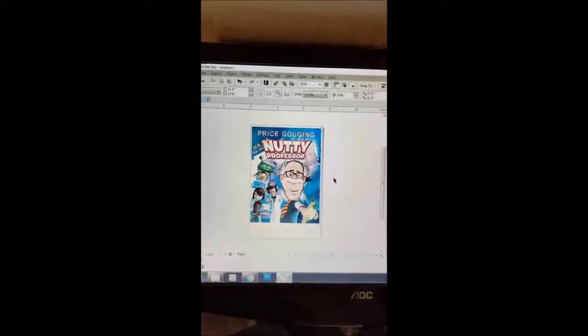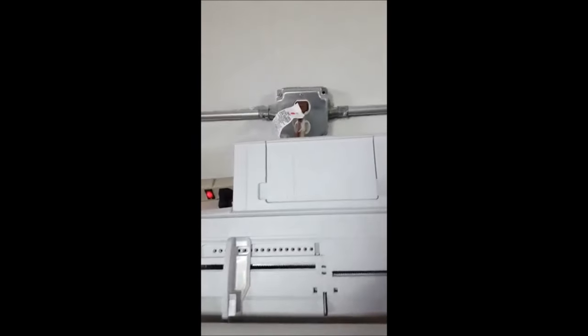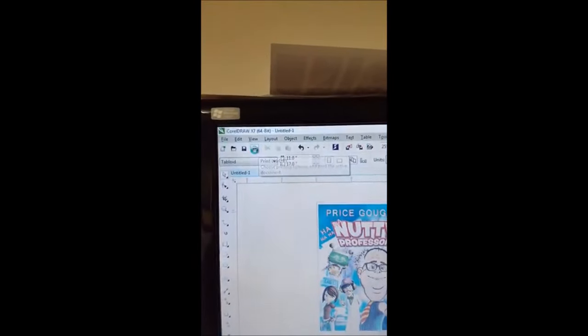Now we're just going to print it. I used 11 by 17 paper. Let me put that in the machine first. It's the bright side out. I'm using TexPrint and the logos on the back go out towards the wall. Using my SG 800 Virtuoso by Sawgrass and we're going to print.